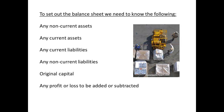We need to know non-current assets, then current assets, current liabilities, then non-current liabilities. This gives us the first part of the accounting equation as assets less liabilities. Then we find the original capital and any profit or loss that needs to be added, which gives us the equity part of the balance sheet.